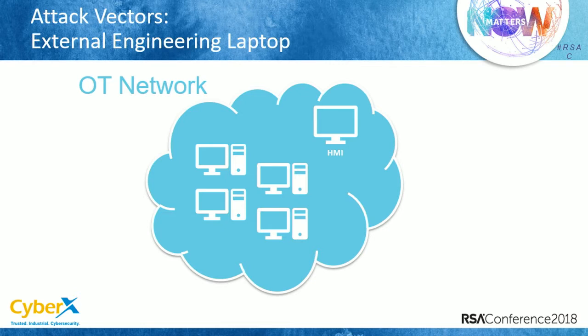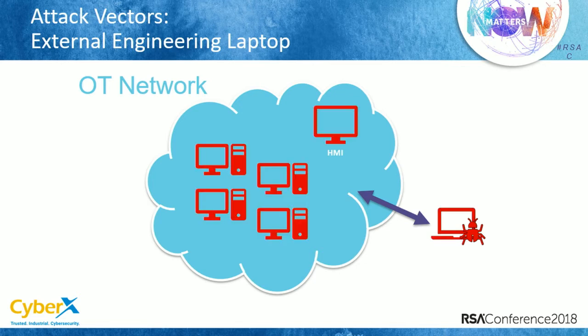Another attack vector is a malicious engineering computer or engineering laptop. For example, some contractor or external engineer comes with his laptop to write some code to the devices or to maintain the network, and he brings with his laptop something malicious that infects the network. That's just another attack vector.